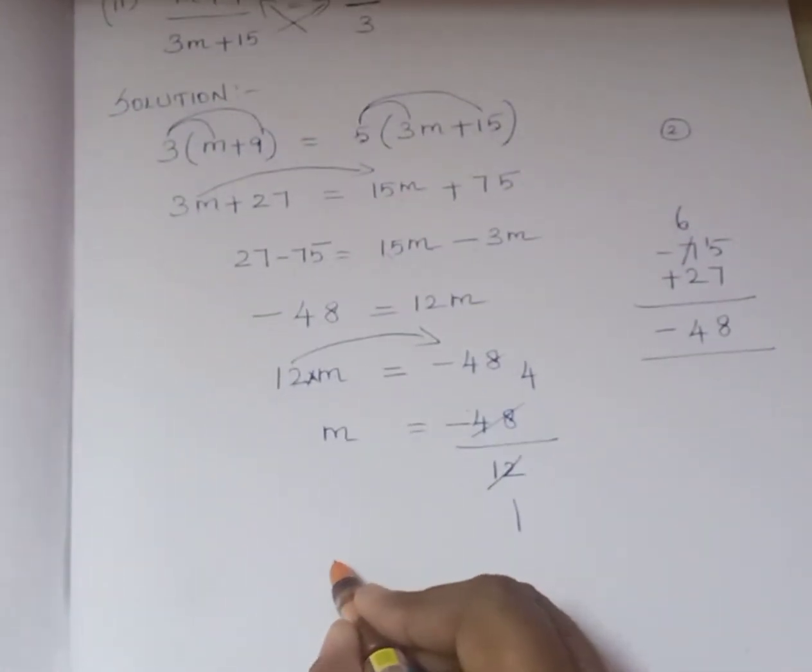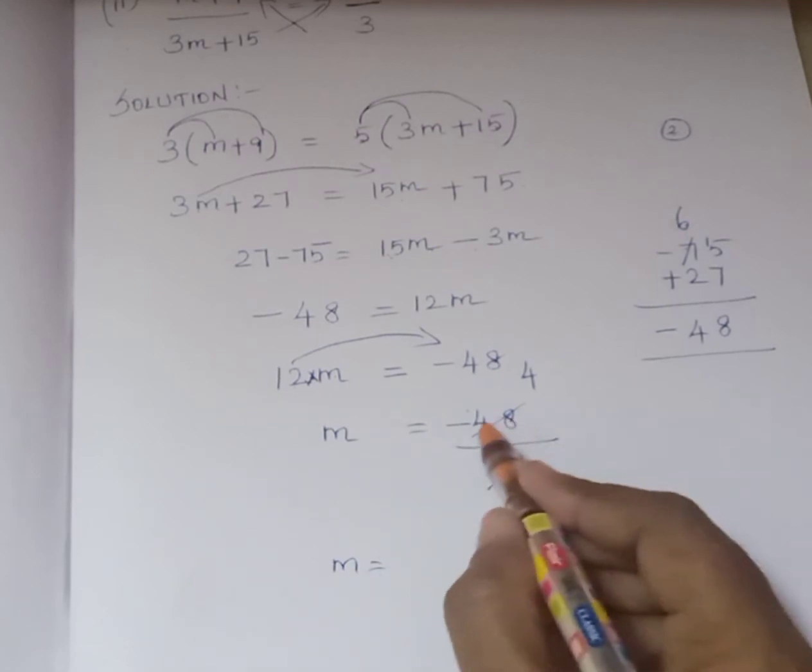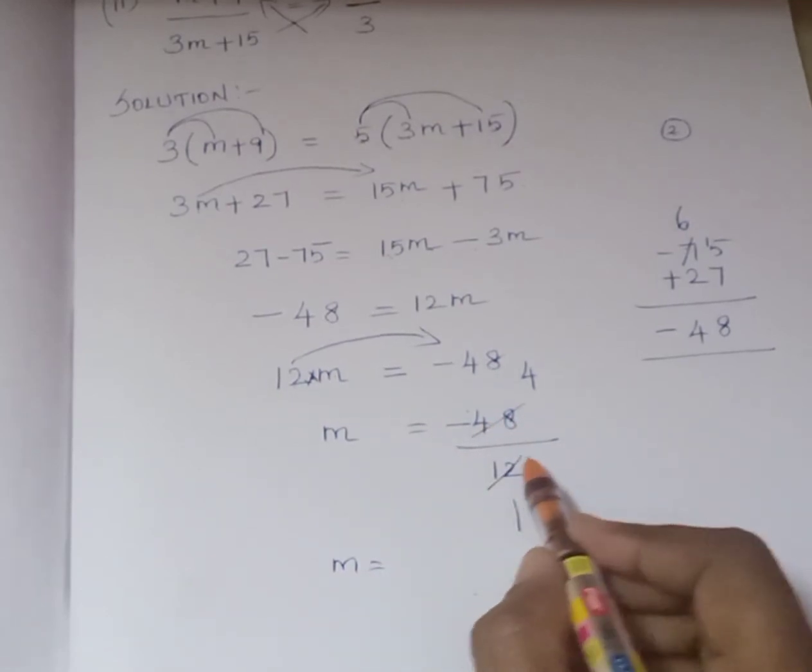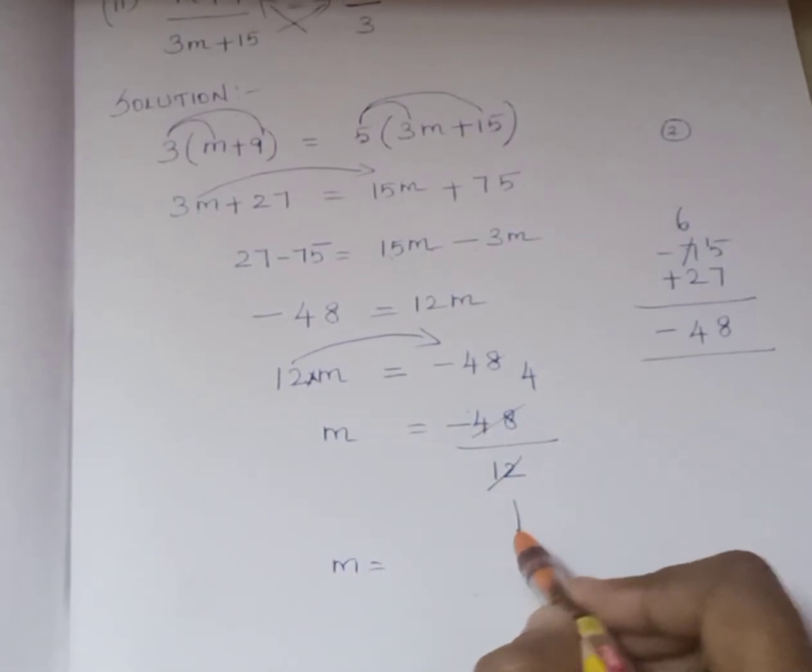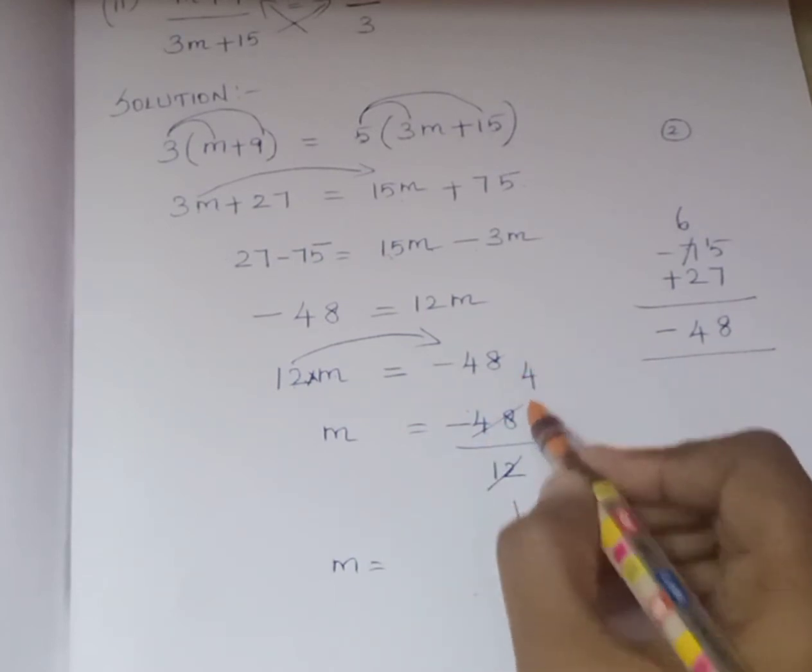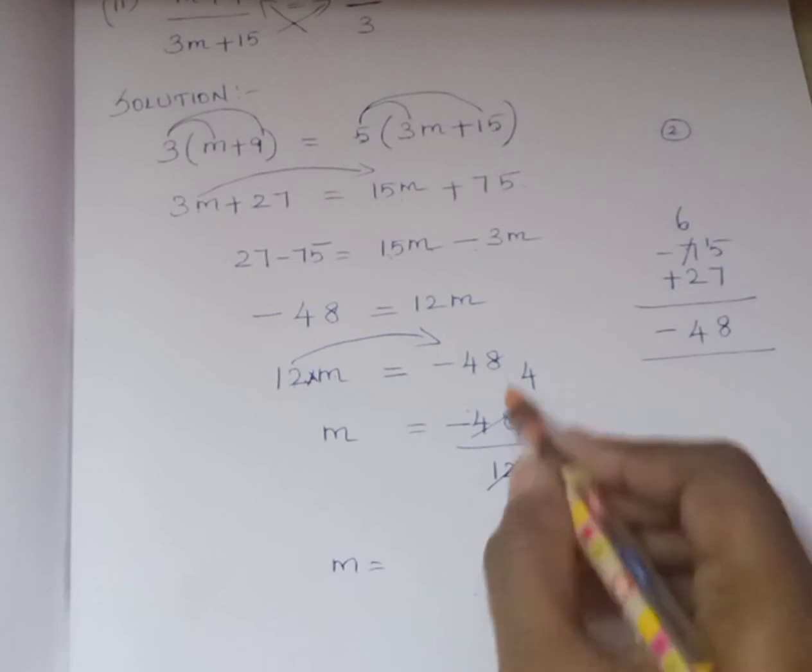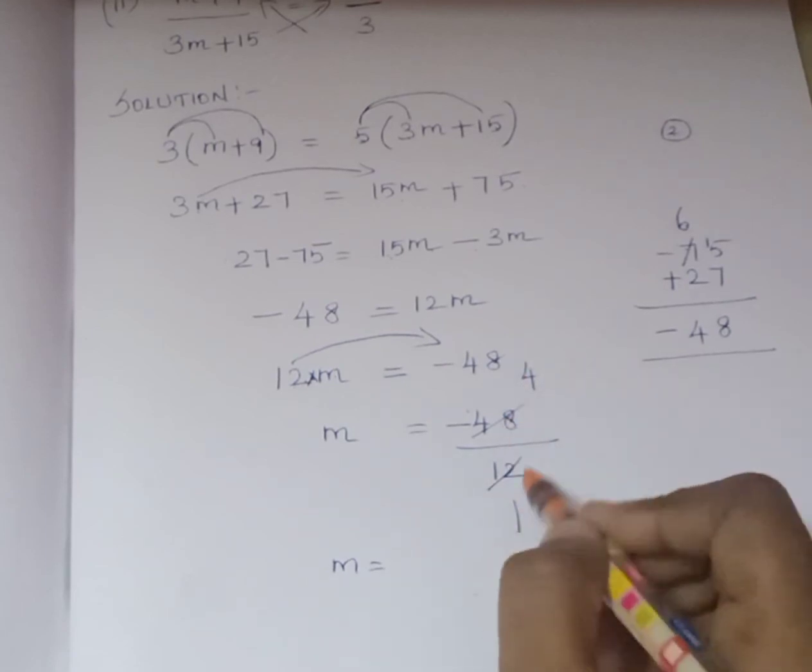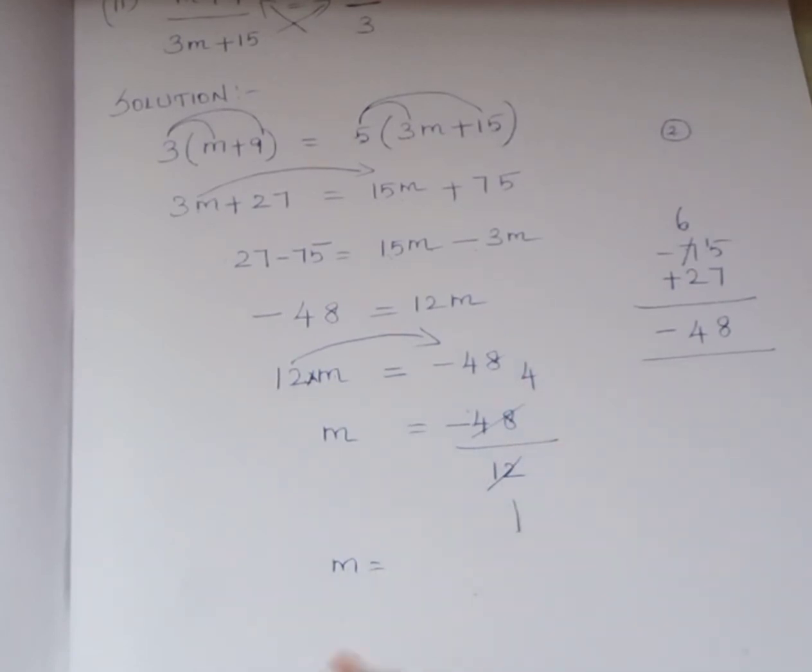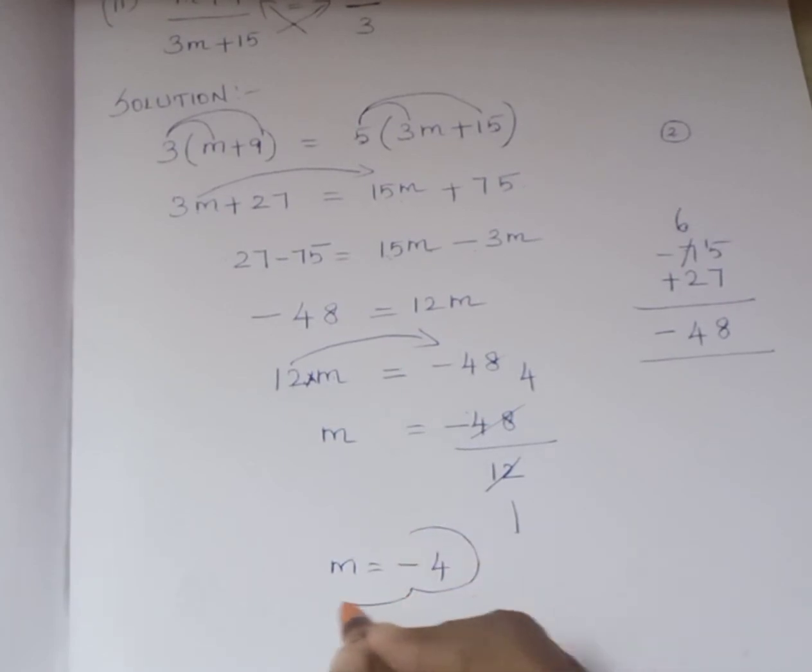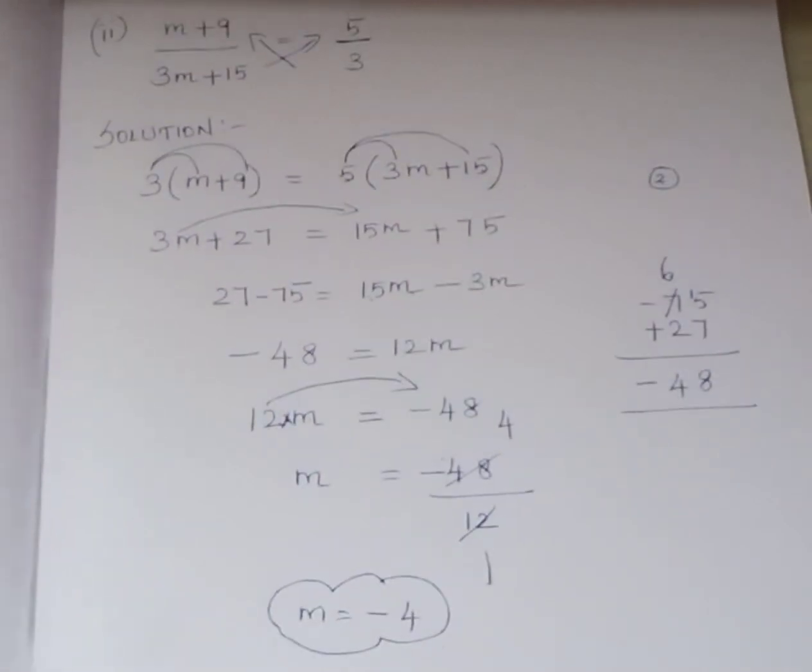m is equal to -48 divided by 12. 1 twelve is 12, 4 twelves are 48. So m is equal to -4. This is the answer. Thank you.